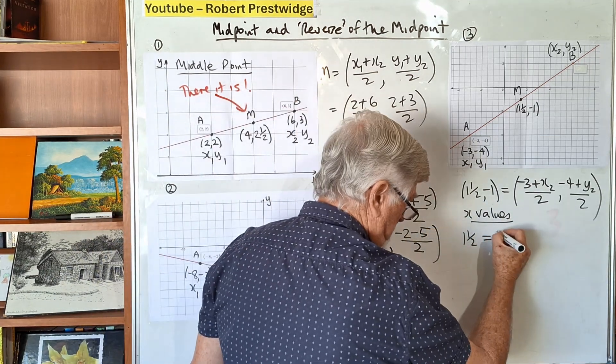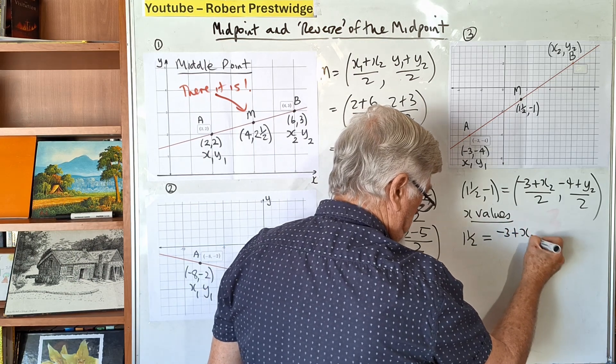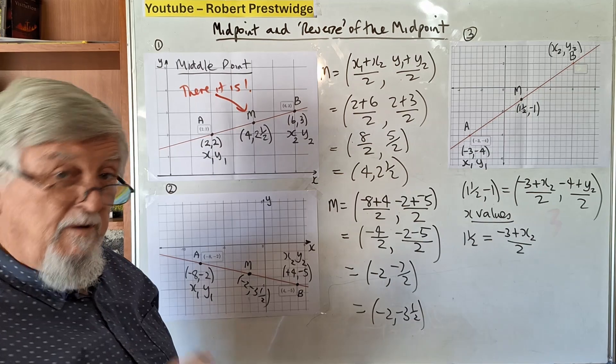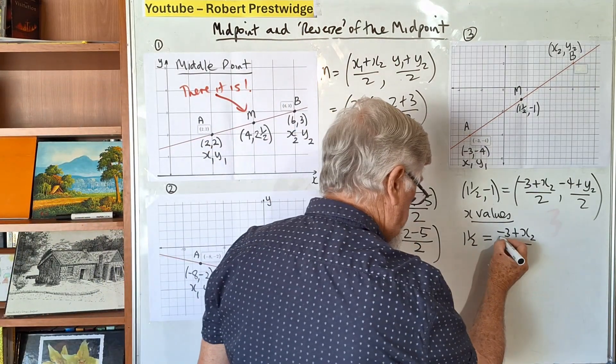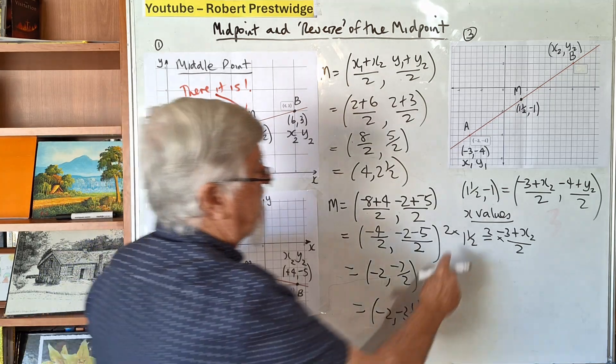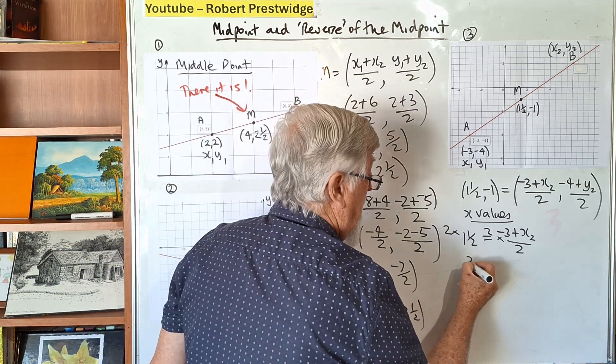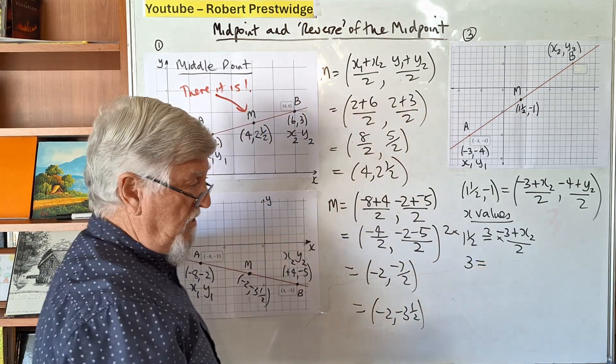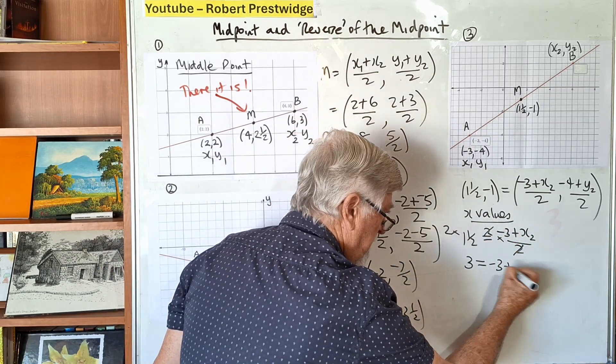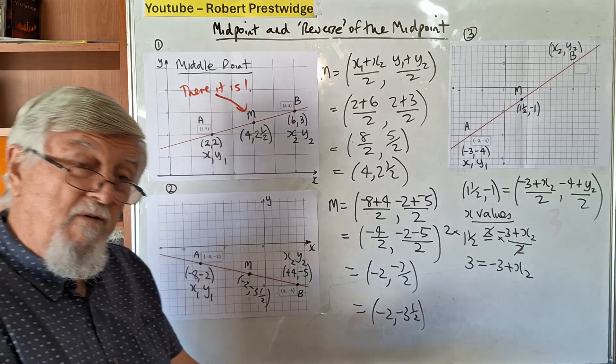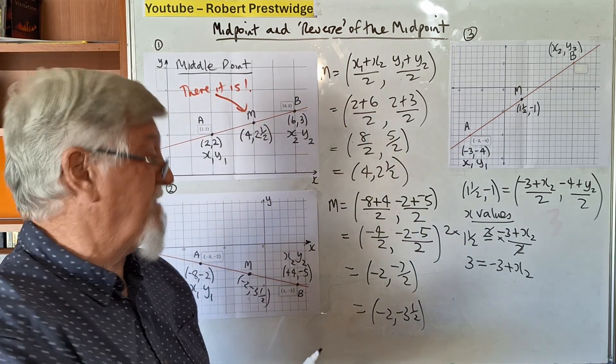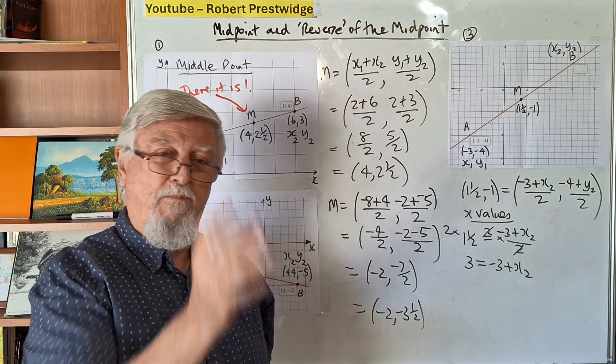You make two equations, not one. Make an equation for the x values. The equation is 1.5 equals (-3 + x₂)/2. If you're good at equations, get rid of the fraction first. Times both sides by 2.